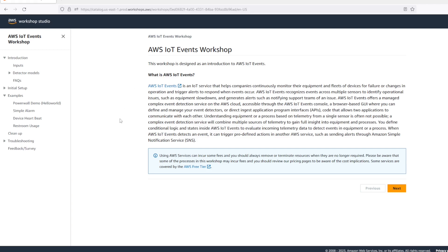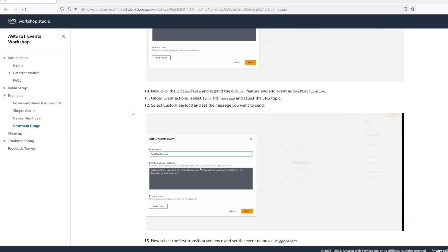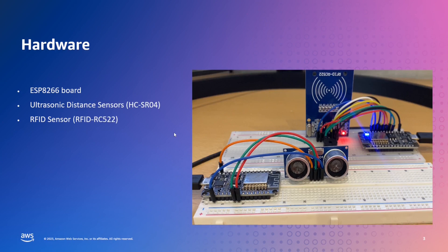Here is the workshop studio where you would find this particular example on how to build a restroom usage monitoring system with AWS IoT Events and set a threshold limit to trigger notification to the cleaning staff. For this example, I've also built a small hardware which consists of an ESP8266 port connected to an ultrasonic distance sensor. This sensor is acting as the usage monitoring sensor in the restroom. It captures an event whenever a hand is waved in front of it and the distance between the hand and the sensor is less than 20 centimeters. It is captured as a usage and then sent back as an input to AWS IoT Events. The other part of the hardware is the RFID tag sensor, which is used to update the status of the restroom as clean once the cleaning has been performed, done once the cleaner taps their RFID card in front of the sensor.